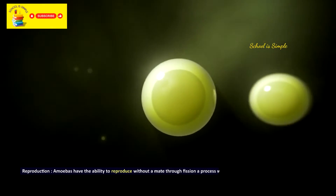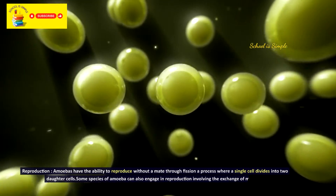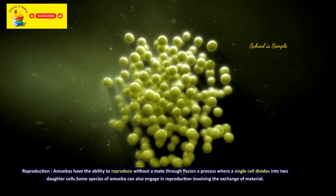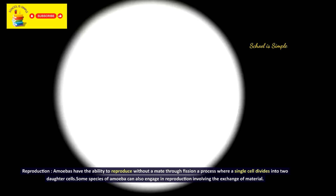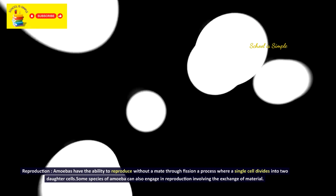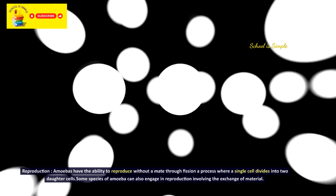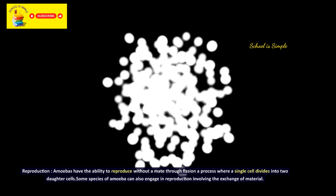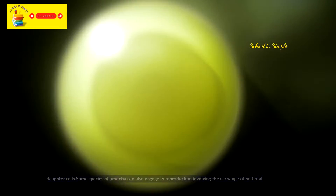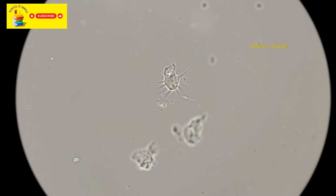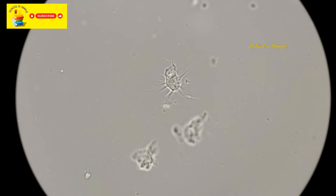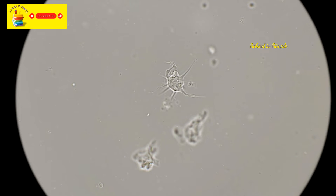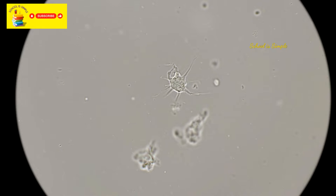Reproduction: amoebas have the ability to reproduce without a mate through fission, a process where a single cell divides into two daughter cells. Some species can also engage in sexual reproduction involving the exchange of genetic material. Diversity: there exists an array of amoeba types, each exhibiting different behaviours and adaptations. While some lead free-living lives, others function as parasites that can cause illness in humans and other animals.